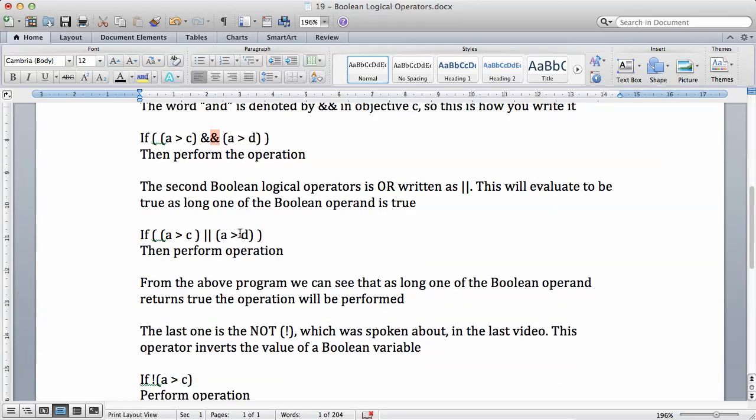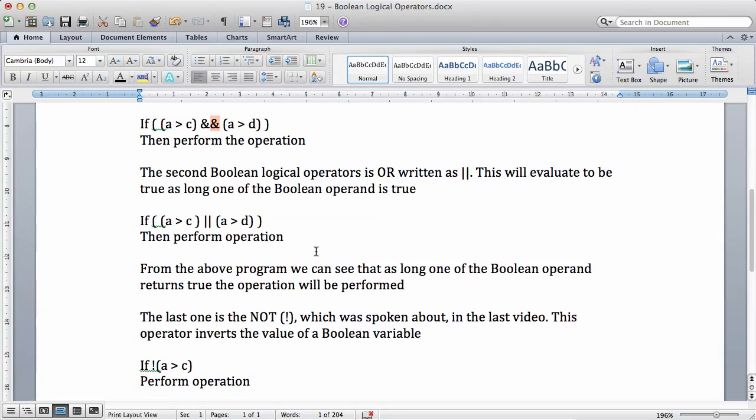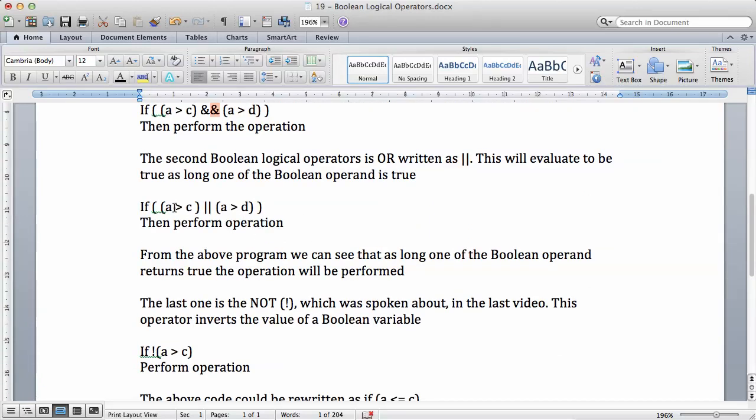For example, the African-American and Asian example I gave and I said if you are African-American or Asian, then you go in. If you negate that, that means everybody else can go in except African-American or Asian. I hope I haven't confused you.